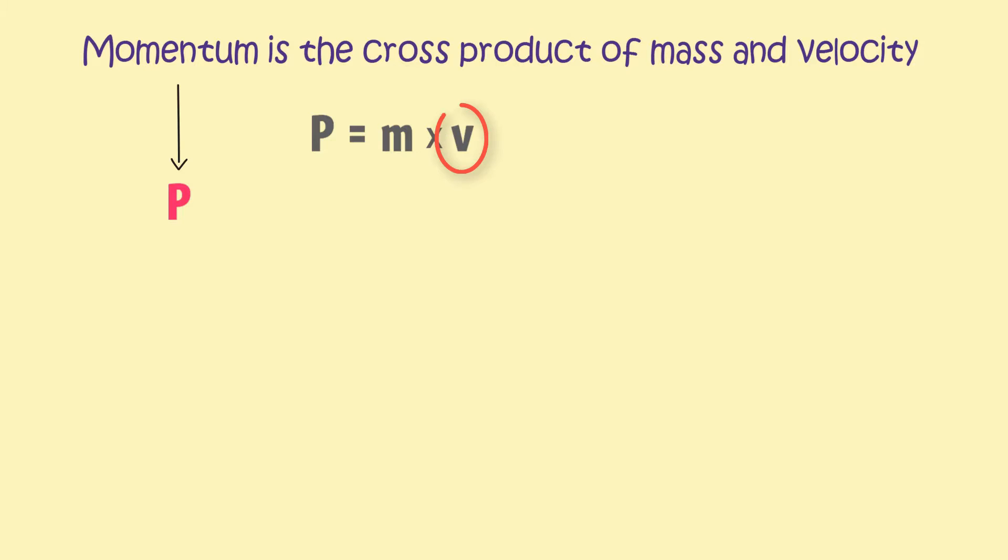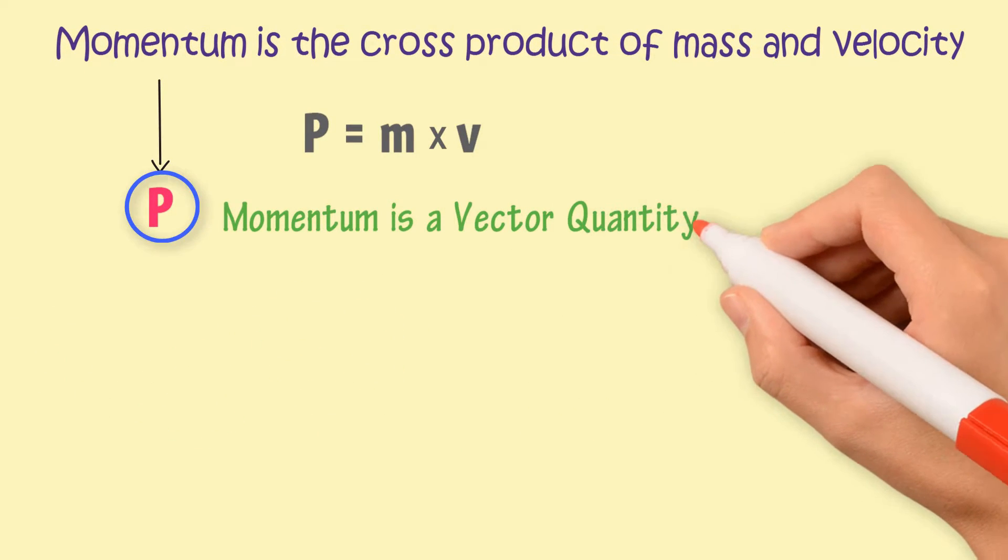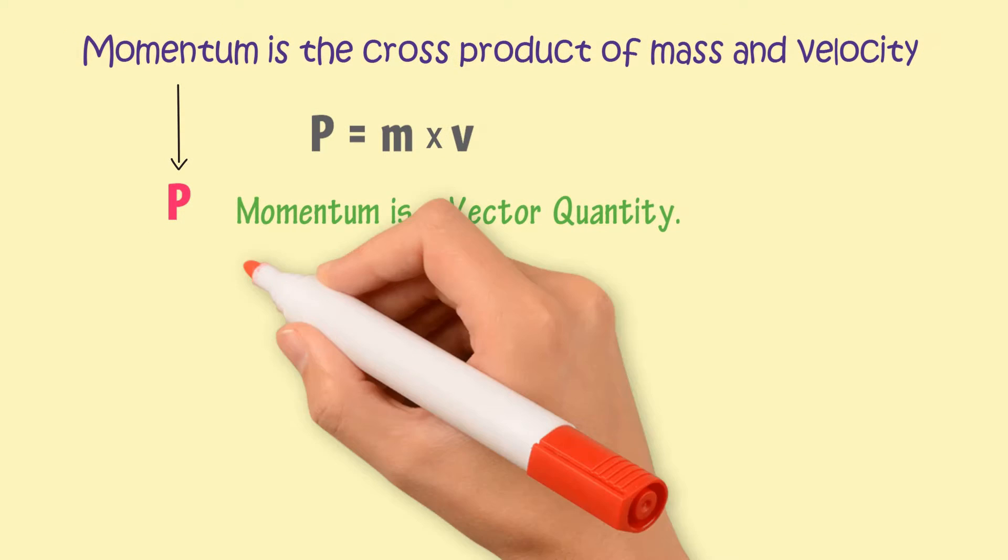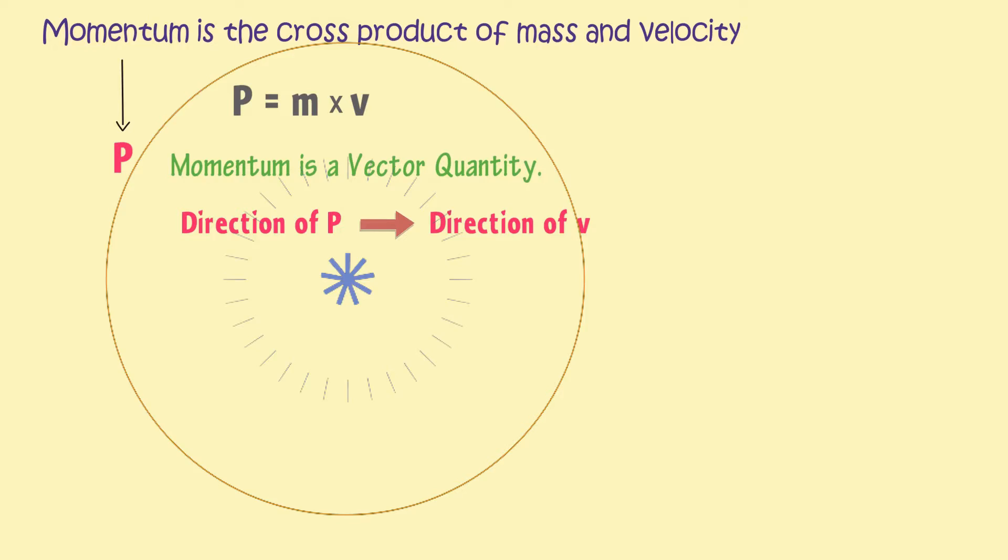We know that velocity is a vector quantity. Hence, momentum is also a vector quantity. The direction of momentum is the same as the direction of velocity.